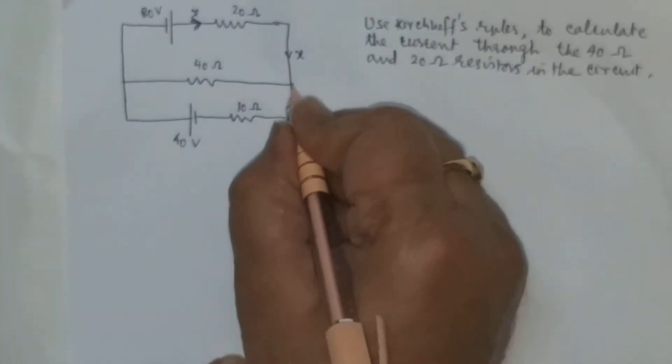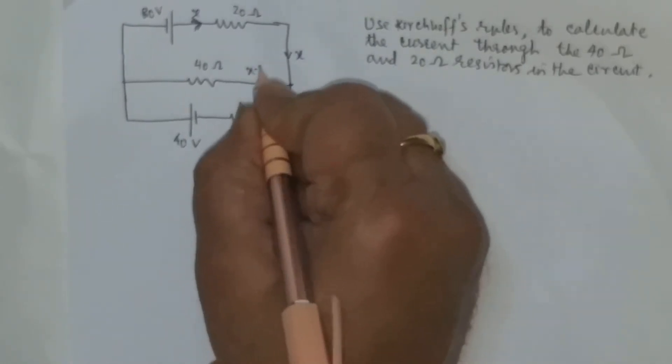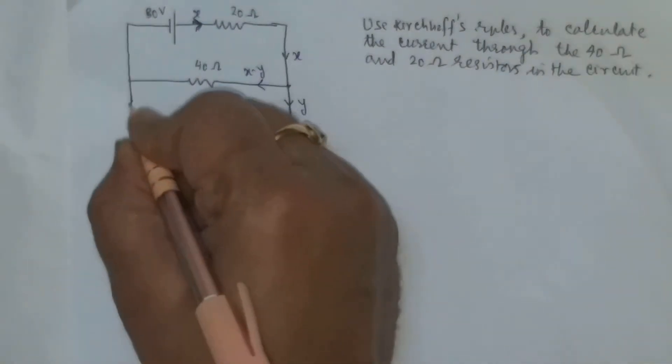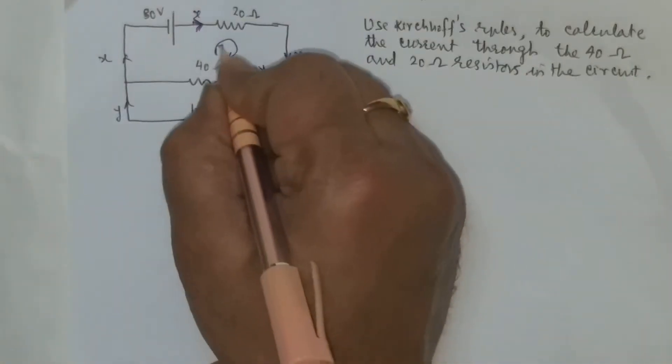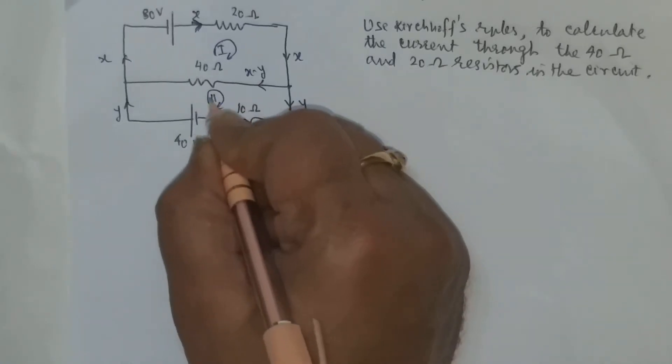Let us say that out of this x, y goes here and this is x minus y. This y and x minus y combine to form x. You can have two loops. This is the first loop and this is the second loop.